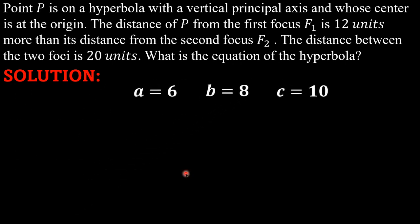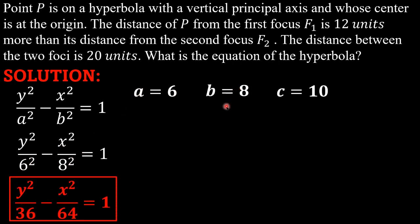Now that we know the value of a, b, and c, pwede na natin balikan yung equation natin kanina, which is y² over a² minus x² over b² is equal to 1. By substitution, that is y² over 6² minus x² over 8² equals 1. Hindi pa tayo tapos. The final answer is y² over 36 minus x² over 64 is equal to 1.